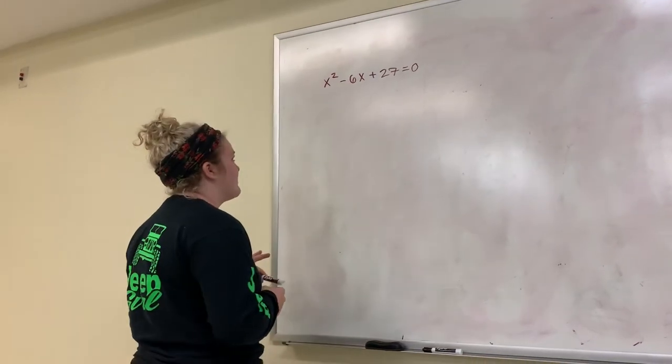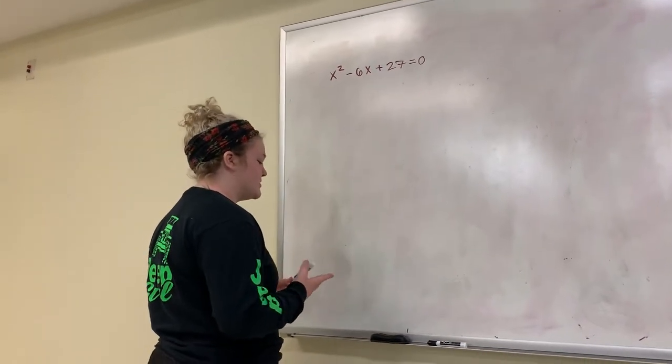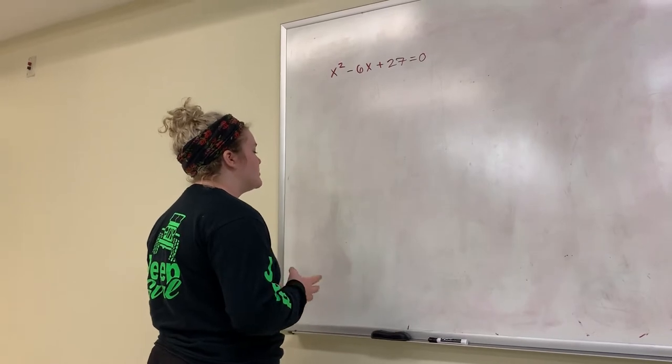So today I'm going to be solving x squared minus 6x plus 27 equals 0. I'm going to be solving this using the quadratic formula.